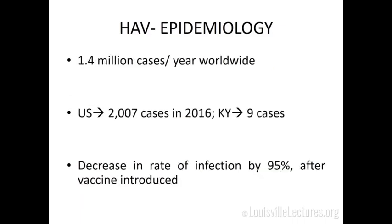There are about 1.4 million cases per year worldwide. In the U.S. in 2016, the CDC reported about 2,007 cases, with nine cases in Kentucky that year — which has evidently changed. Once the vaccine was introduced, the rate of infection decreased by 95%, which is very significant.